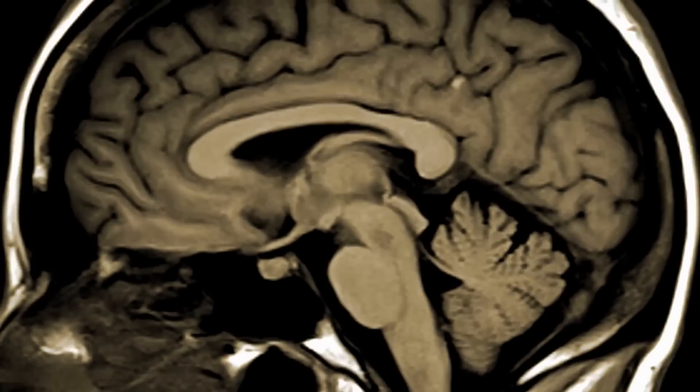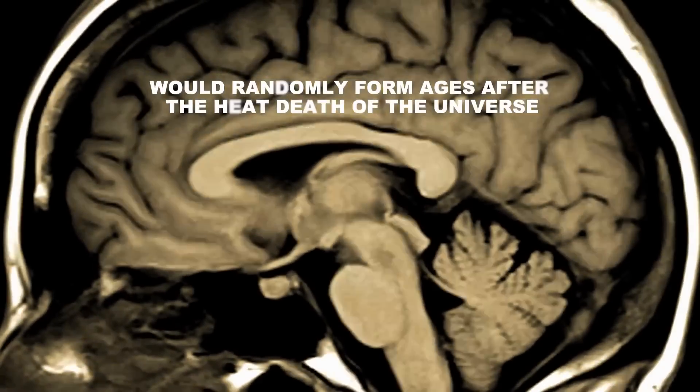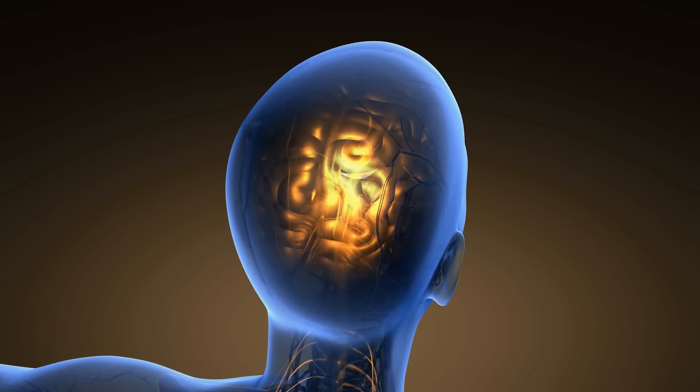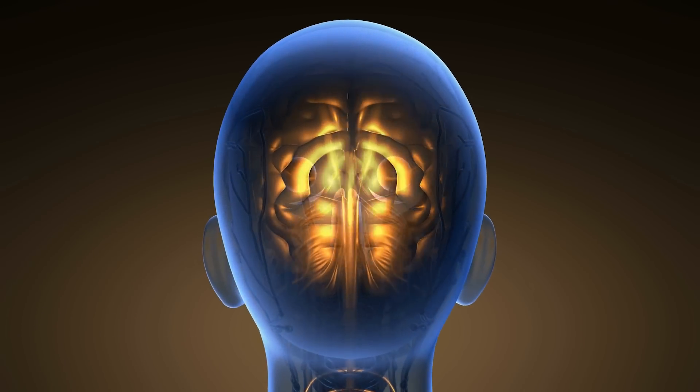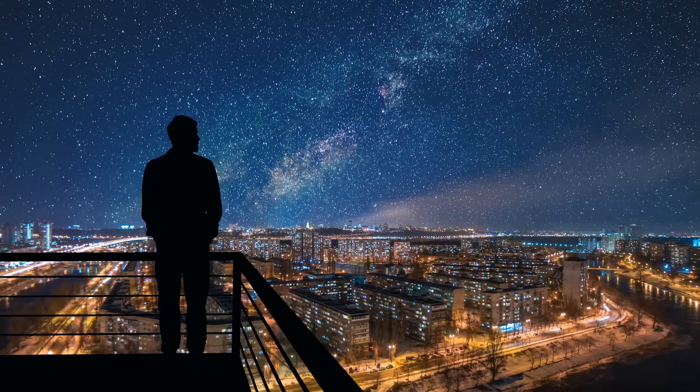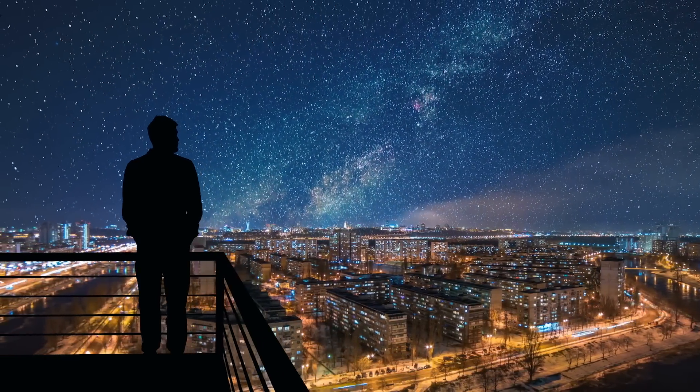Statistically, it is much more likely that a Boltzmann brain would randomly form ages after the heat death of the universe, complete with fabricated memories, including the belief that it existed in a younger universe than it is for our entire observable universe to have formed as we know it.